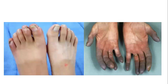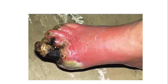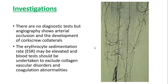Small ulcers at the tip of the toes can be seen, along with blue, dusky, and cyanotic fingers with small ulceration at the tips of digits. In advanced cases, gangrene is present and amputation of the affected toes may be necessary.